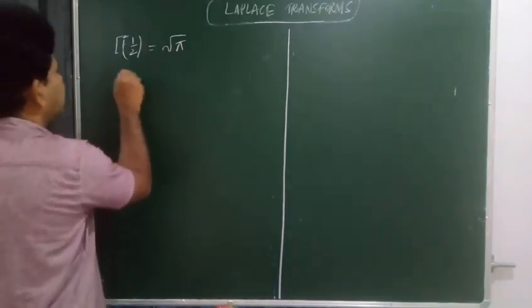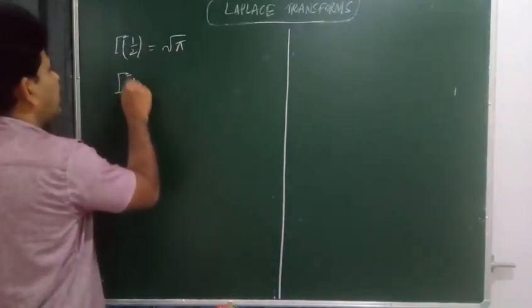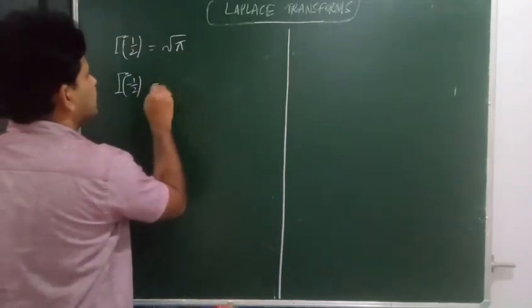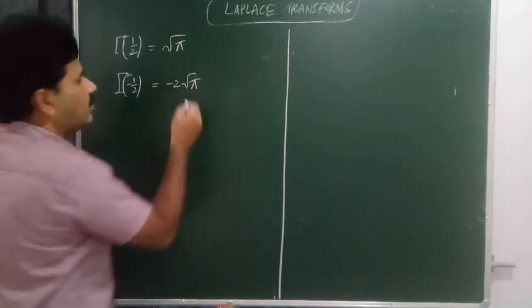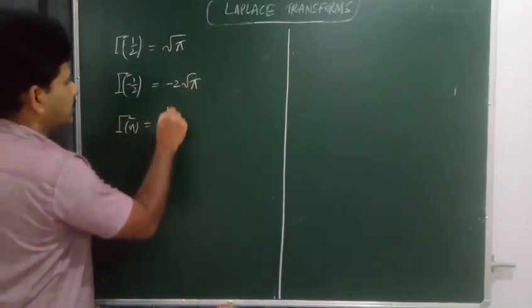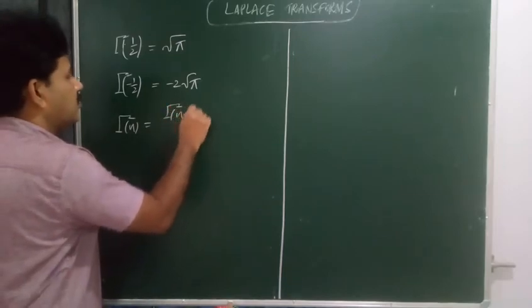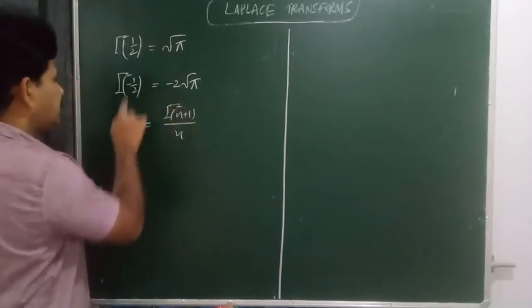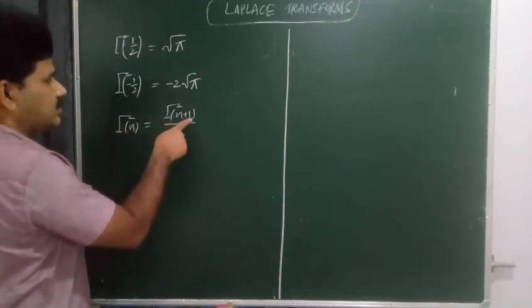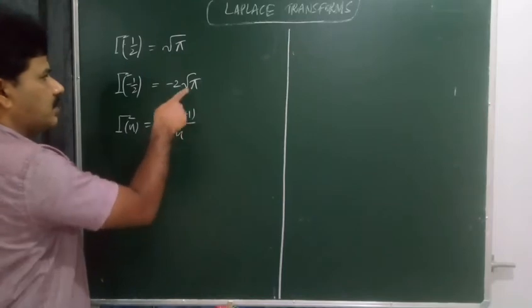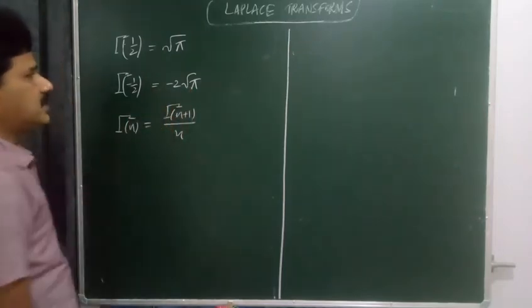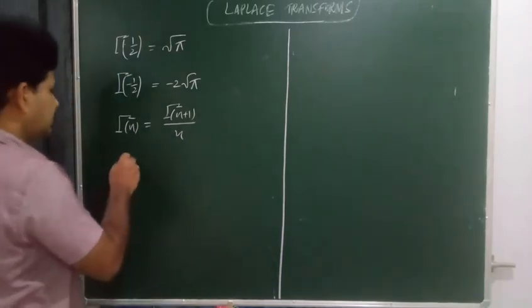How do we get gamma of negative 1/2? We know that gamma of n equals gamma of n plus 1 over n. According to that, substituting n equals negative 1/2, gamma of negative 1/2 equals gamma of positive 1/2 divided by negative 1/2. Since gamma of 1/2 equals root pi, dividing by negative 1/2 gives minus 2 root pi.